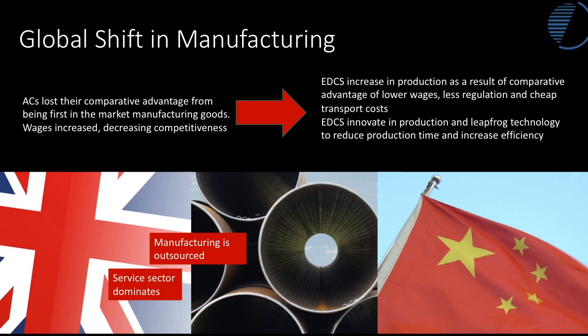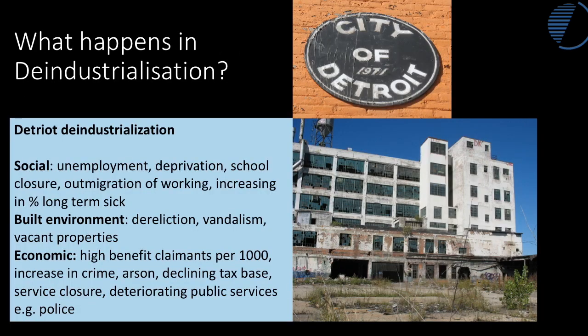EDCs were also able to leapfrog some of the stages that advanced countries had been through in production, reducing production time using just-in-time techniques and increasing efficiency. Unfortunately, while EDCs experienced a boom in manufacturing and rising employment, in advanced countries like the USA certain areas were very badly hit. That loss is called de-industrialisation — the loss of the manufacturing base. In places like Detroit, the impact was extremely severe. Factories closed and left derelict sites; the city suffered from mass unemployment, poor environmental quality, increased crime and arson, all related to the decline in the tax base as industry collapsed.